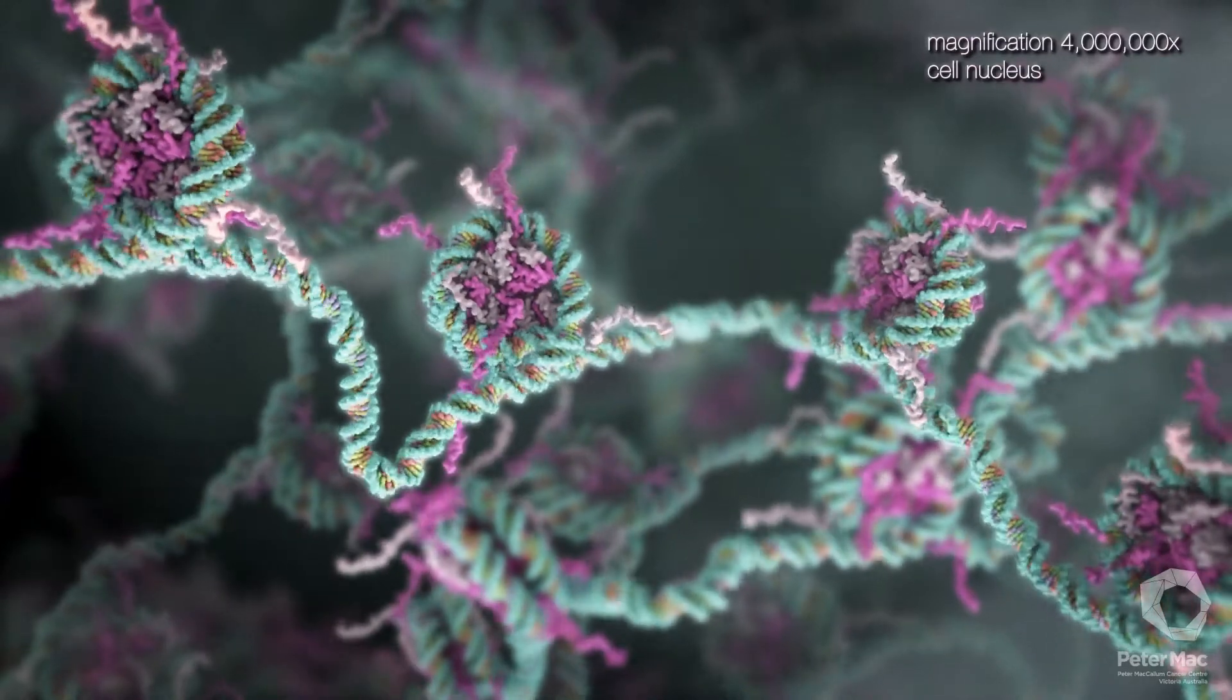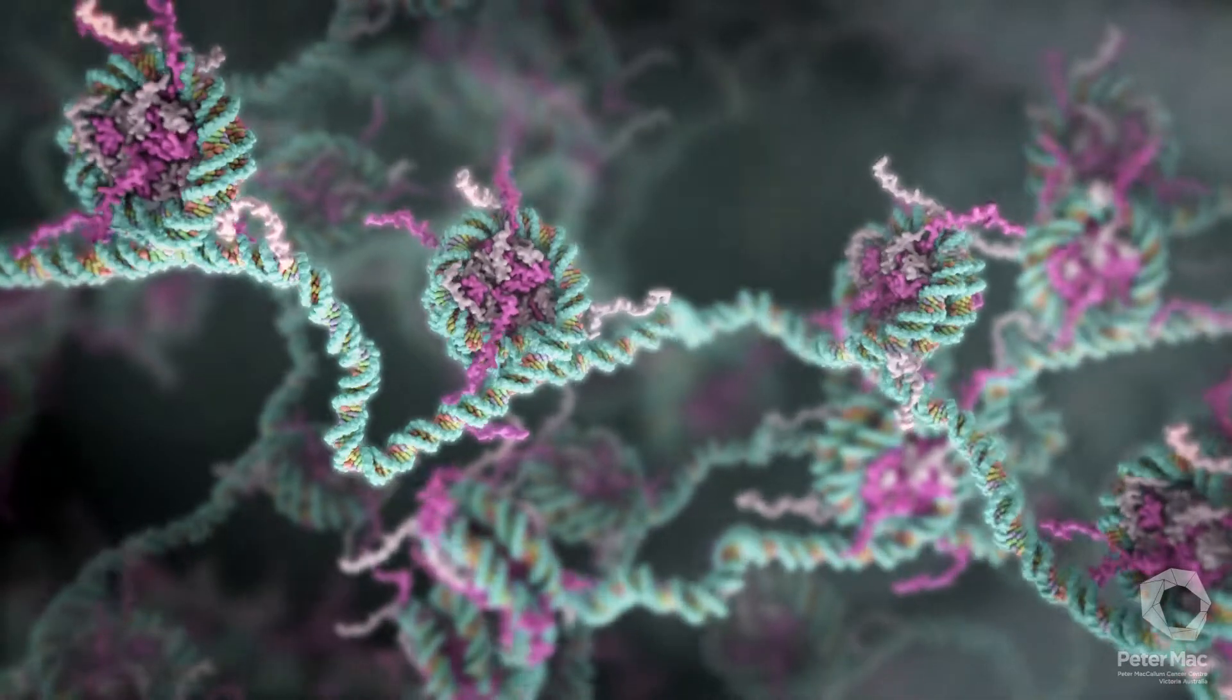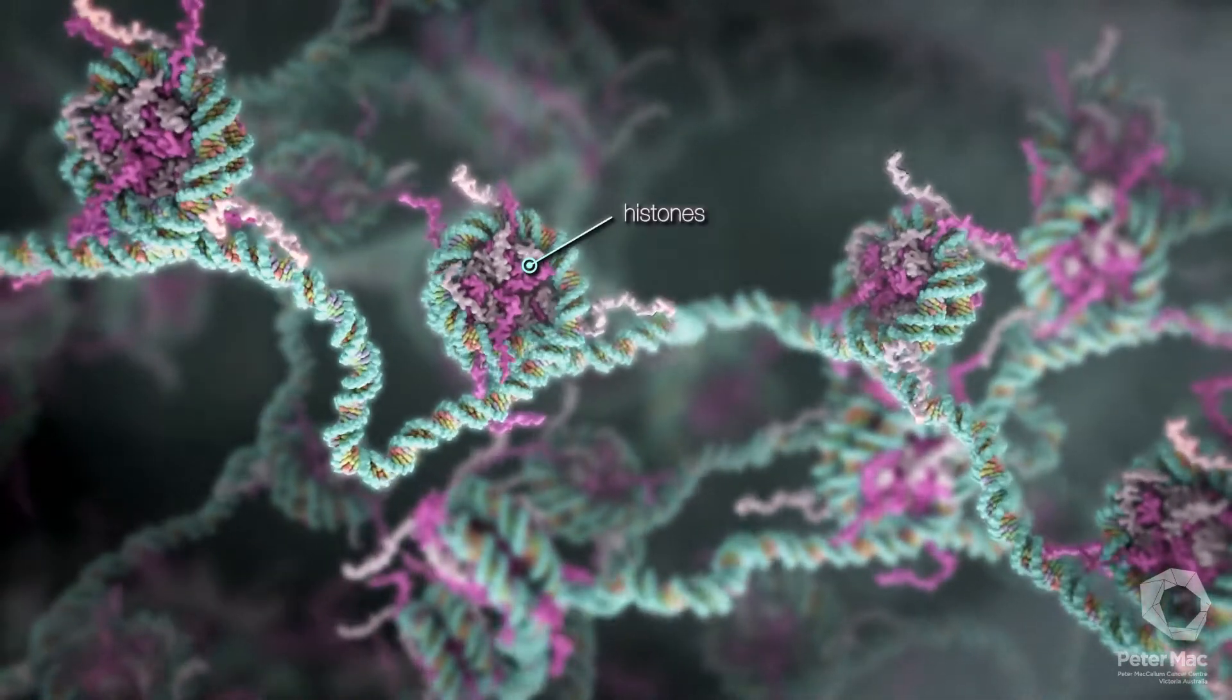To keep two metres of DNA organised within the nucleus, it is wound around special structures called histones, much like thread on a spool.